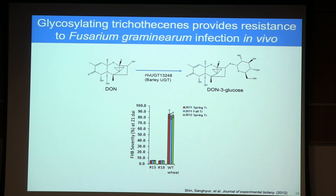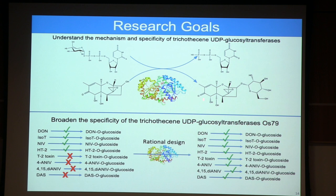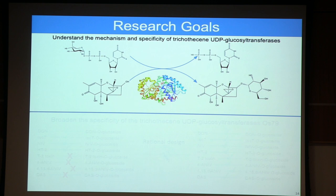One way around this is to look for additional UGT enzymes, hopefully finding one with broader specificity that can glycosylate more trichothecines. Unfortunately, that has proven very difficult using the primary sequence of these enzymes, and so structural data is required. The first project aims at understanding the mechanism and specificity of a trichothecine UDP glucosyltransferase, then using structural information and rational design to broaden the specificity of that UGT.